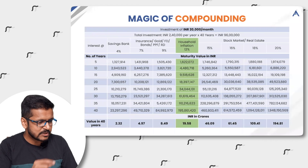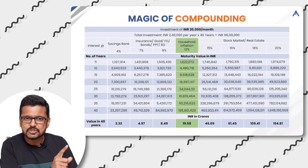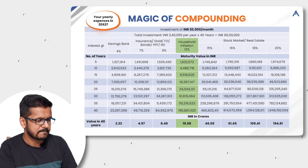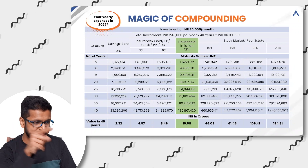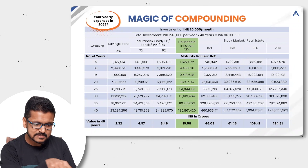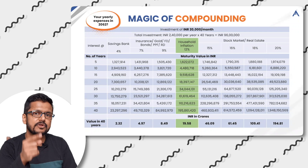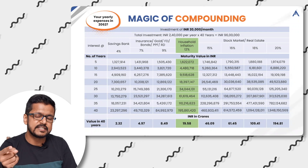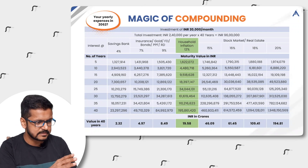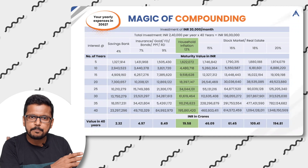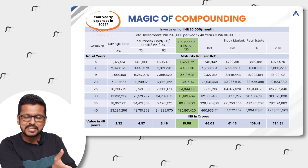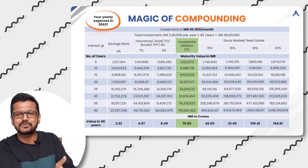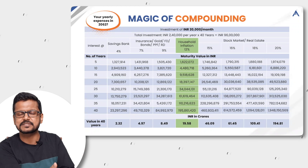40 years is a very long time. So it looks big, but it actually is not. Think about your yearly expense in 2062 and you will notice that this kind of amount is what you or your next generation needs to be financially free. And this is achievable — you don't need 30–40% kind of returns to achieve this.